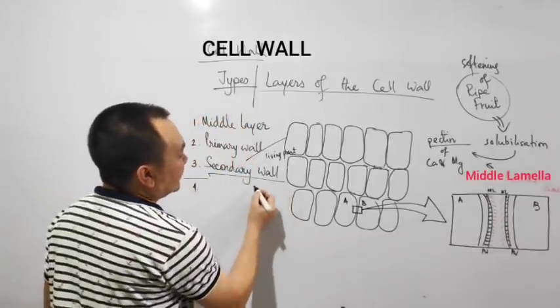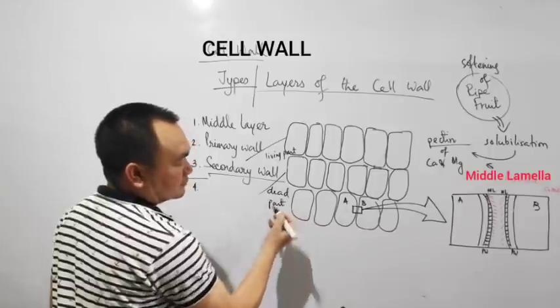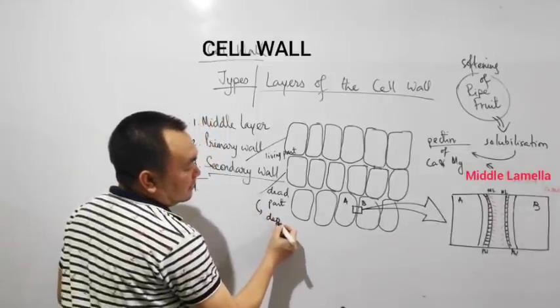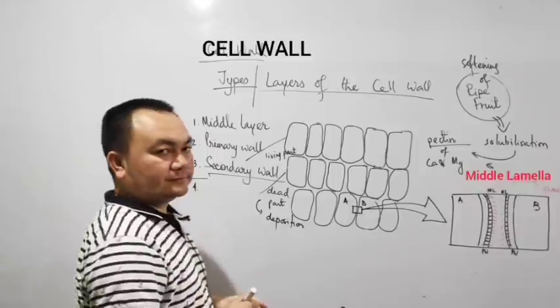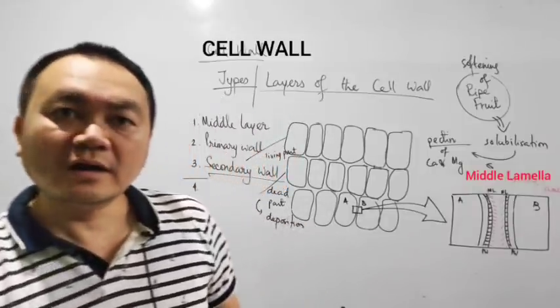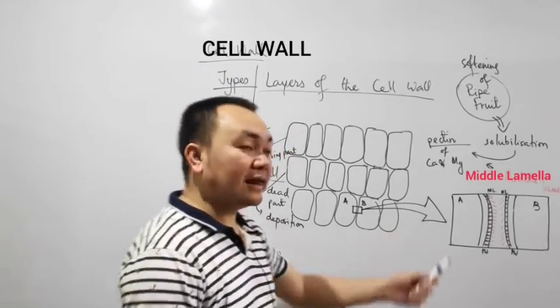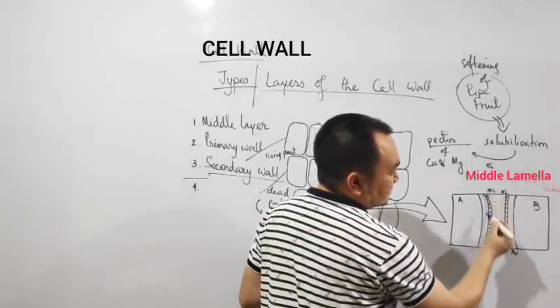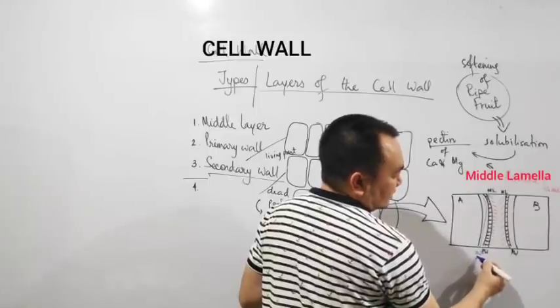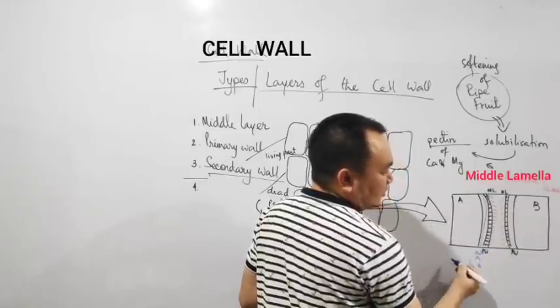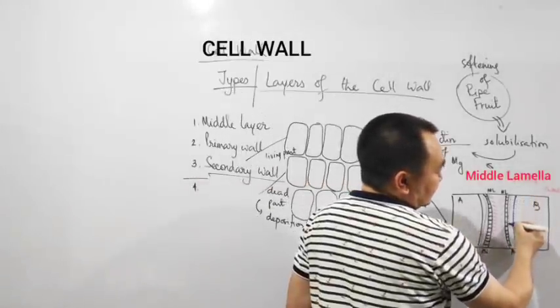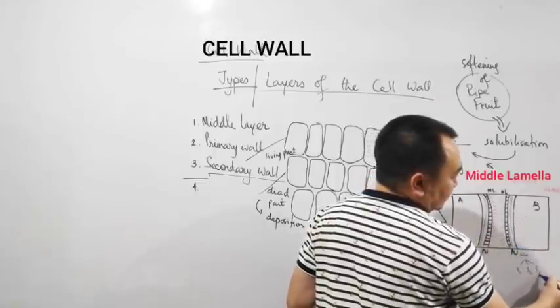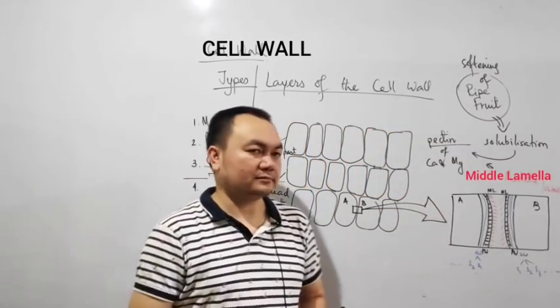The next wall, secondary wall, is the dead part. However, growth happens. How? Due to material deposition. Depending upon how much material is being deposited, the secondary wall has several layers. Like in the A part, let us say, it has two layers. This is the secondary wall part. It has two layers: the first one S1, S2, and it will go on. And in the B part, let us say it has one, two, three secondary wall layers, namely S1, S2, S3, and it goes on.